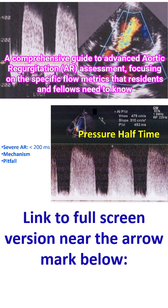While PISA provides a snapshot, spectral Doppler provides insight into the hemodynamics of the entire cardiac cycle. Pressure half time measures the rate of pressure equalization between the aorta and the left ventricle during diastole. For severe AR, pressure half time is less than 200 ms. The mechanism: as the LV fills rapidly from the aorta, the pressure gradient drops quickly. However, there is a pitfall — pressure half time is highly dependent on left ventricular compliance and systemic vascular resistance. In acute AR, or in patients with high left ventricular end diastolic pressure, the pressure half time will be short.